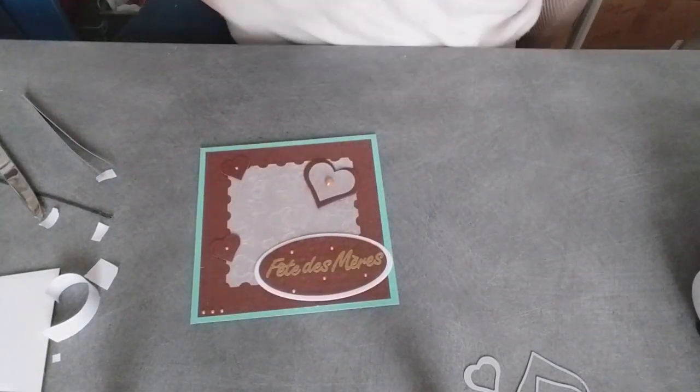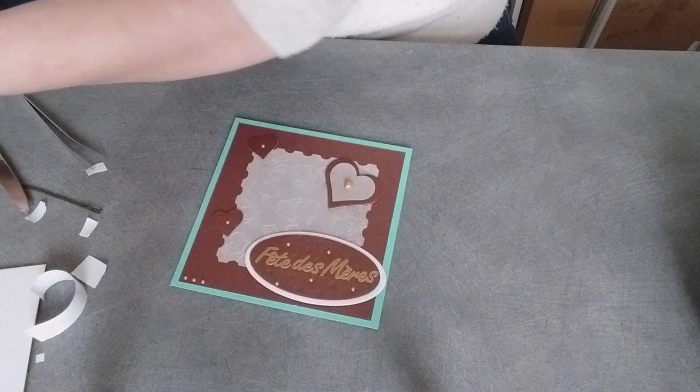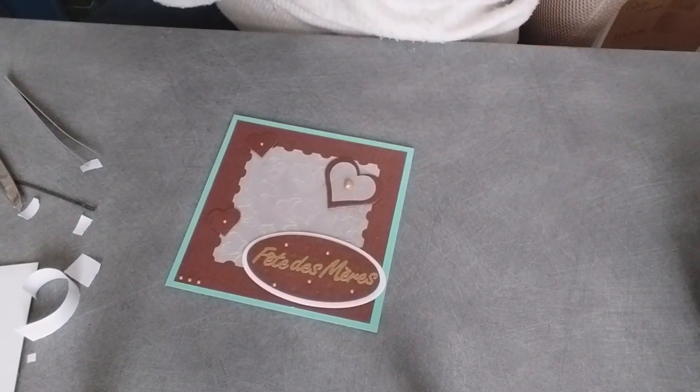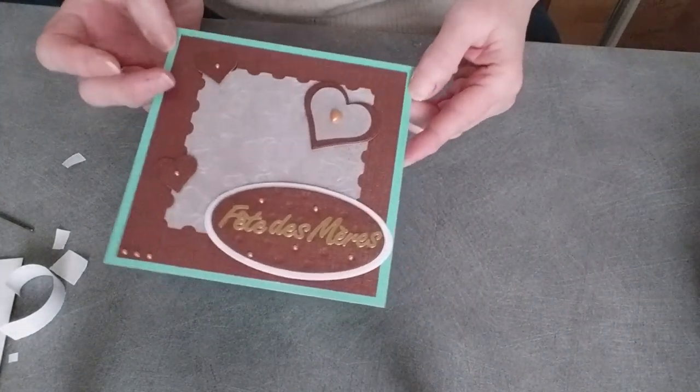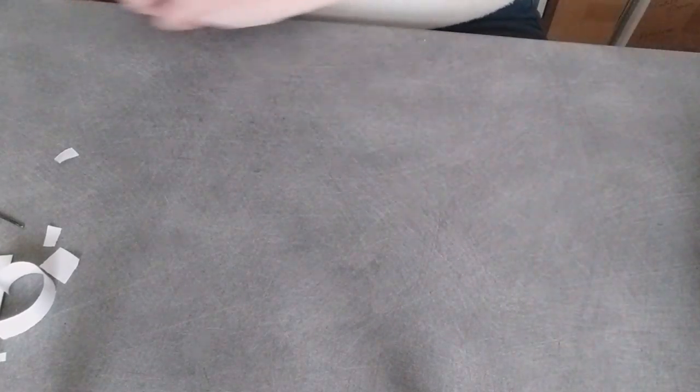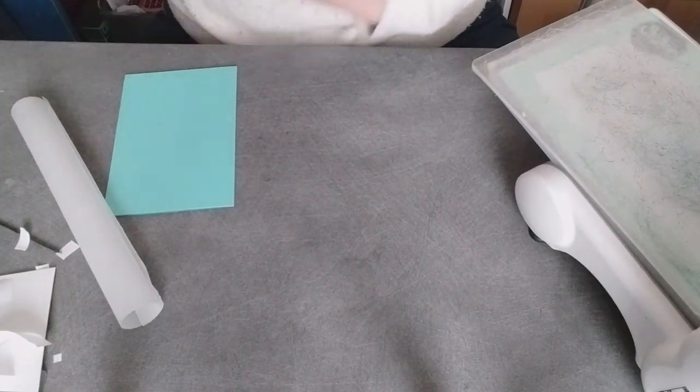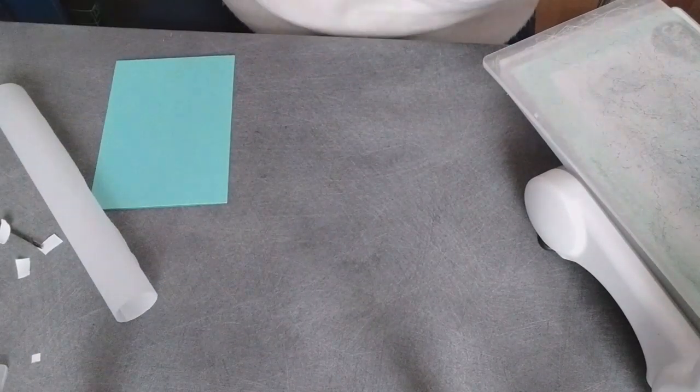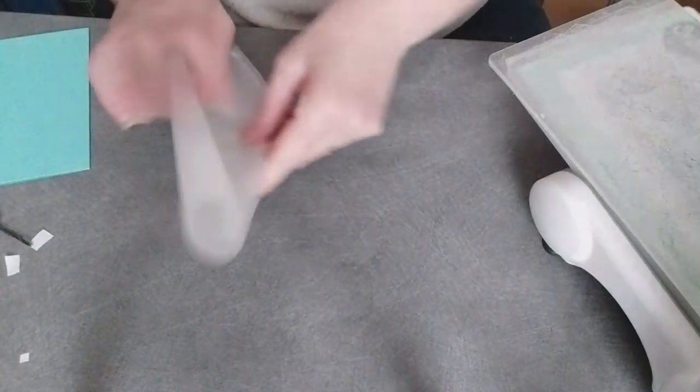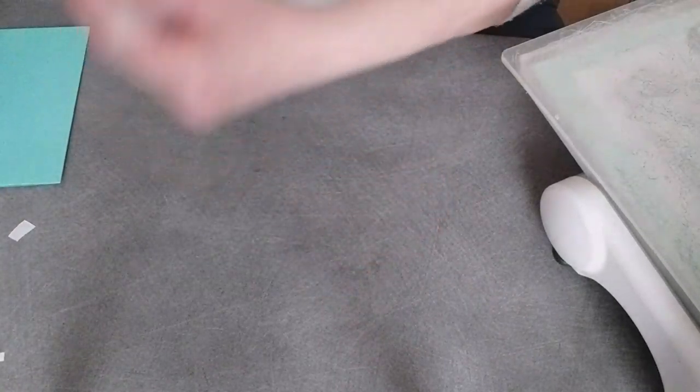Donc voilà, bon j'aurais pu le faire plus grand mais bon. Donc on va faire une deuxième carte. Là je n'ai pas préparé mais ça ne fait rien. Voilà la carte fête des mères. Donc on va en faire une deuxième, là je vais prendre une petite. Bon on va continuer avec le même classeur d'embossage de toute façon c'est pour vous montrer surtout.